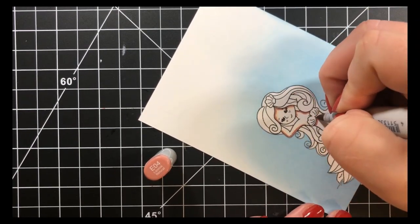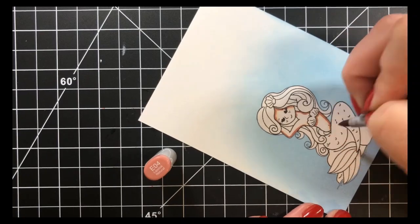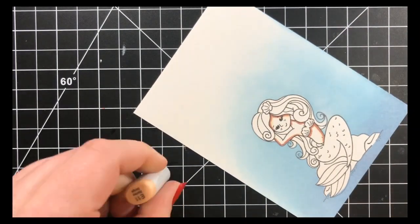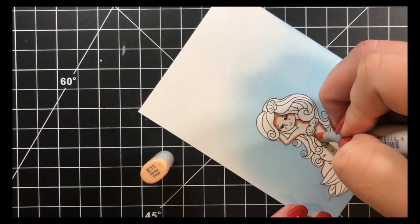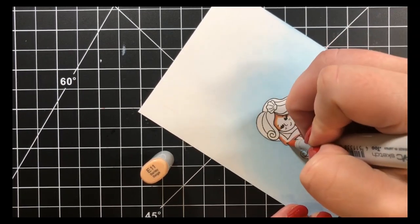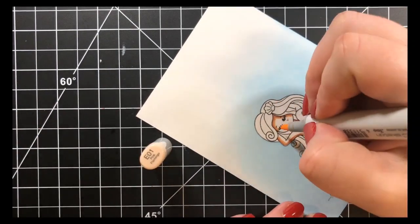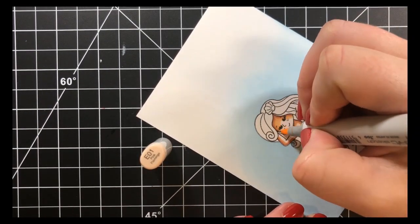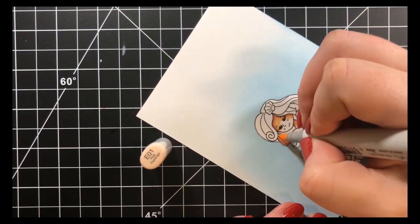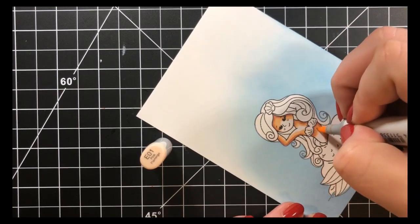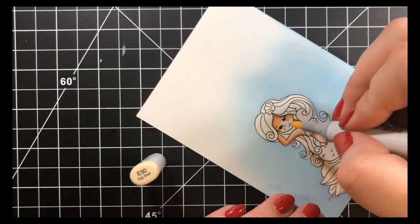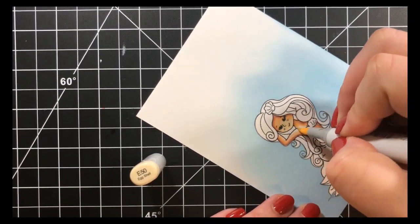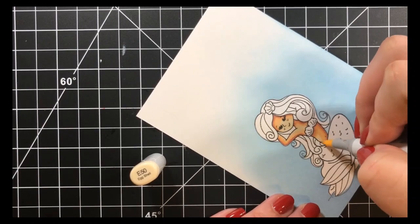Next, I'll go in with my darkest color, which is the E04, just very lightly going over those dark areas, blending that out a little bit with my E11. Then I'll move on to my lightest mid-tone, which is my E01. Then I'll go back in with my lightest color and blend all of that out together. I did take my R20 and just add a little bit of color to her cheeks.